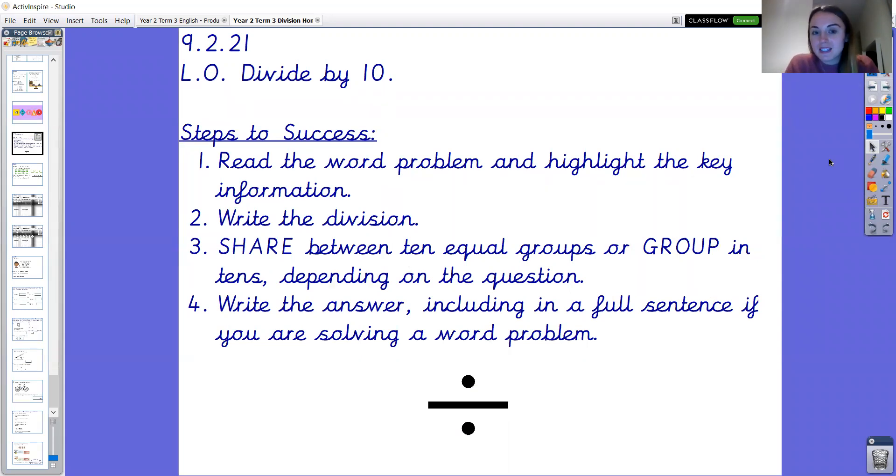Okay, so thinking about our steps to success today. First of all we need to read the word problem and highlight the key information. This might mean reading the question more than once. Then write the division once you know what the question is asking you and then show your method. So share between 10 equal groups or group in 10s depending on what the question is asking you. And then lastly write the answer including in a full sentence if you are solving a word problem.